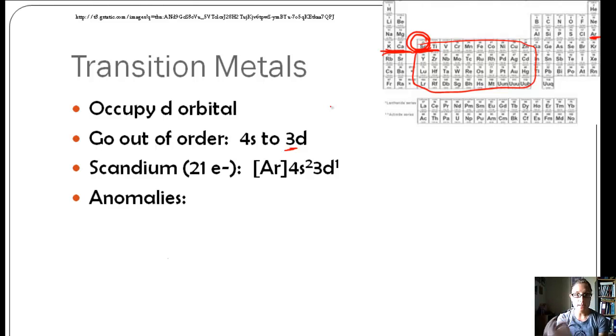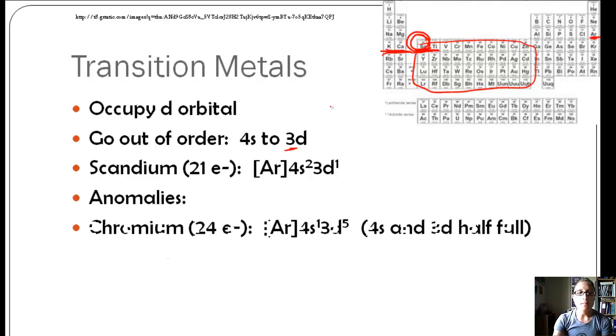There are some anomalies besides flipping the s and the d, or the 4 and the 3. Some other anomalies would be chromium, which is located here. What happens is normally we would say 4s2, 3d1, 2, 3, 4.